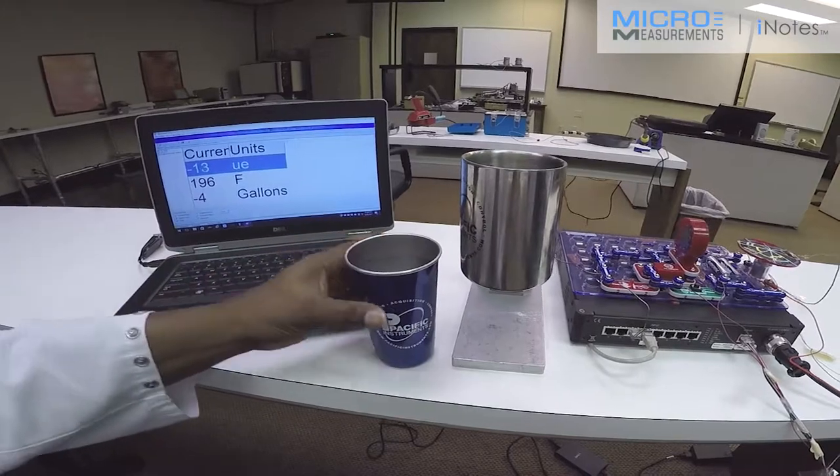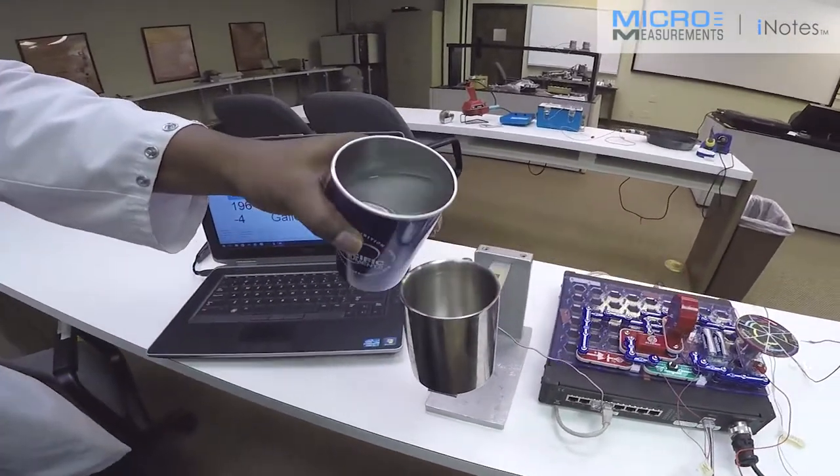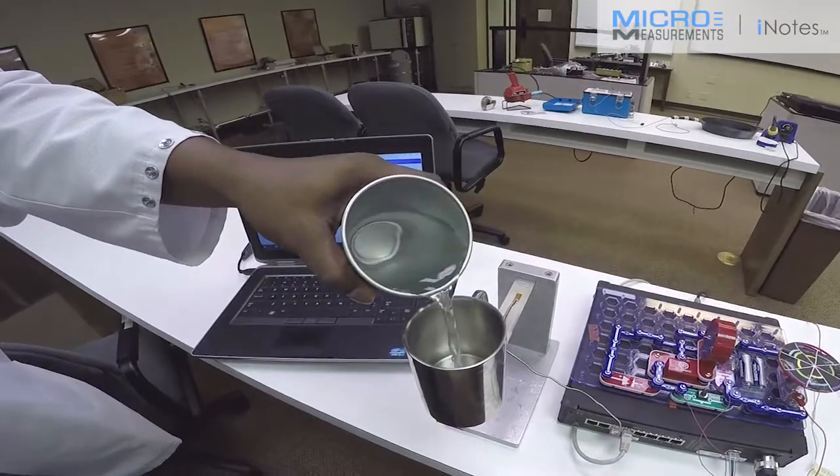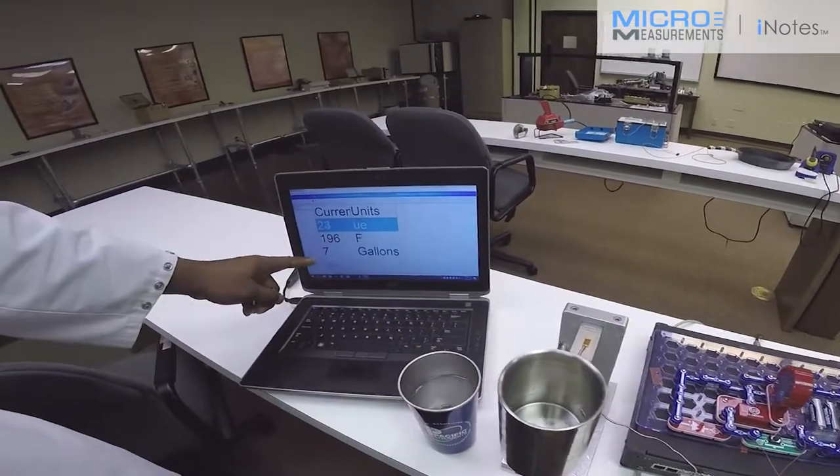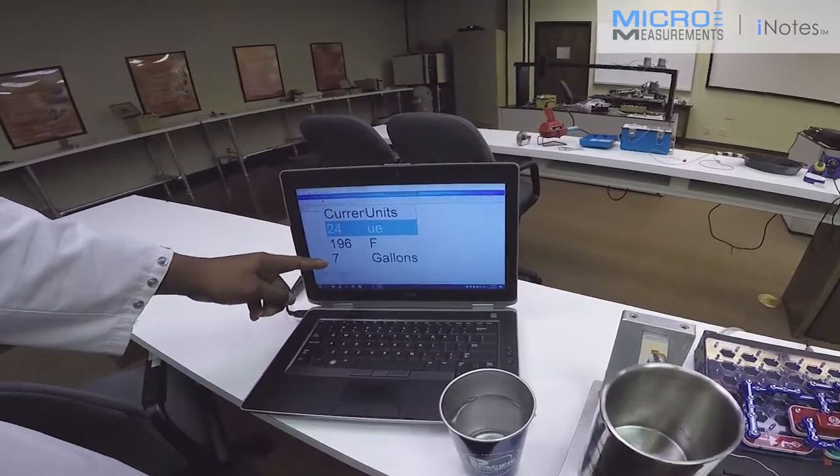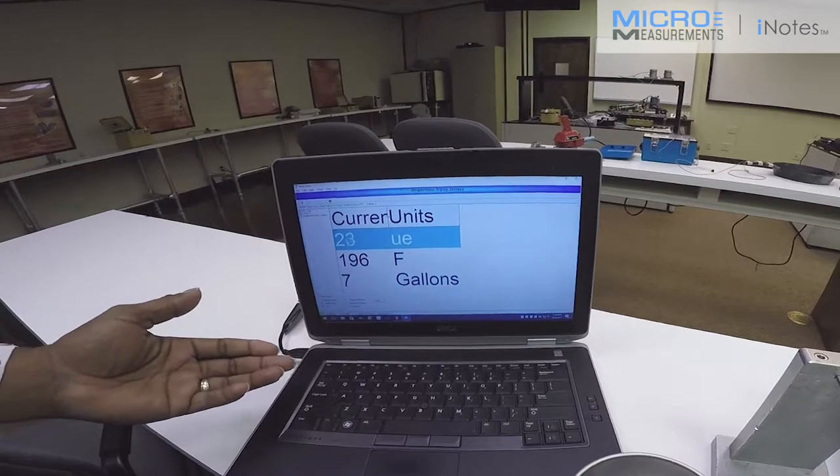So right now, I'm going to simply pour directly into the cup water. And I'll stop here for a second because we can see that the gallons as represented by the output from the strain gauge is going up. We're now at about seven gallons of water.